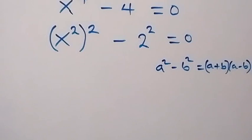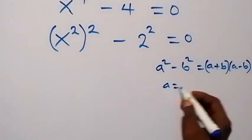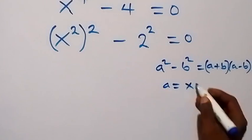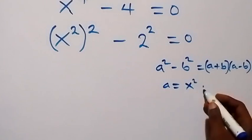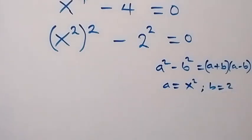And applying this here now, a here is turning as x squared. In this case, a is x squared. Then b is 2 here.